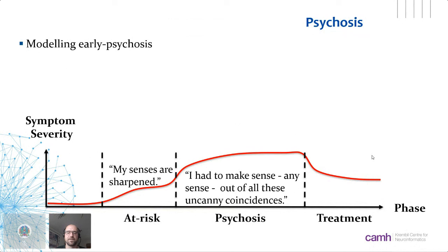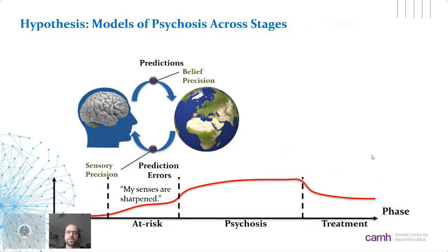For many patients, symptoms don't appear out of nowhere. If we place those patient testimonials into different phases — 'my senses are sharpened' in the at-risk phase, and 'I had to make sense of all these uncanny coincidences' when delusions form — we can explain this using the model. The model assumes a person continuously generates predictions about the world, weighted by belief precision, then updates beliefs via prediction errors weighted by sensory precision.